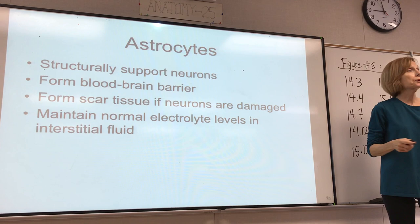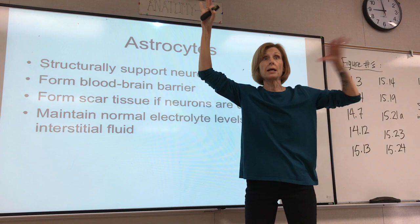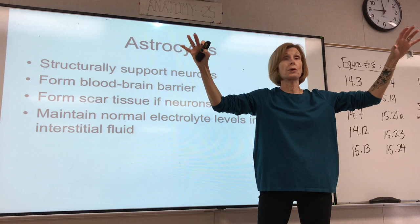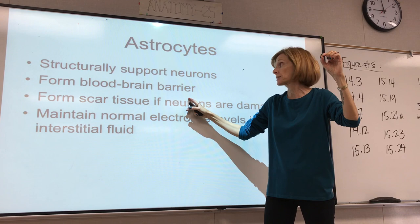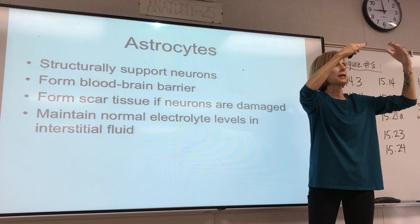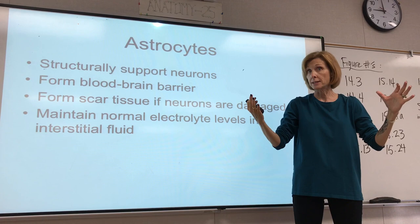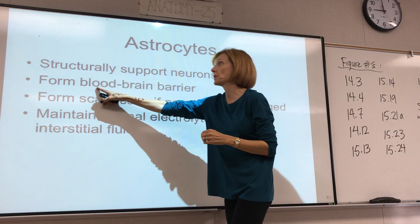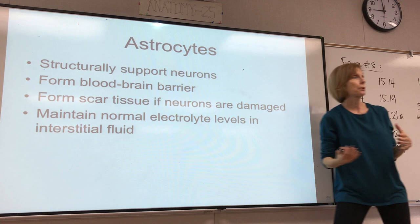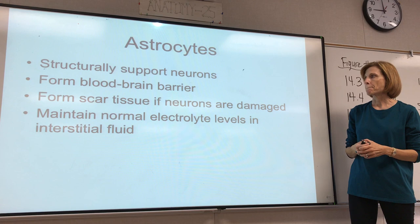The most common neuroglial cells are called astrocytes. Astro means star-shaped, so they have a bunch of processes that stick out. These not only wrap around neurons to help support them, but they also wrap around capillaries — the tiniest blood vessels in the body. Where they wrap around capillaries, they form an extra protective layer, helping to prevent toxins present in the blood from getting into the central nervous system. So they form what we call the blood-brain barrier, which is very important for protecting the brain and spinal cord.